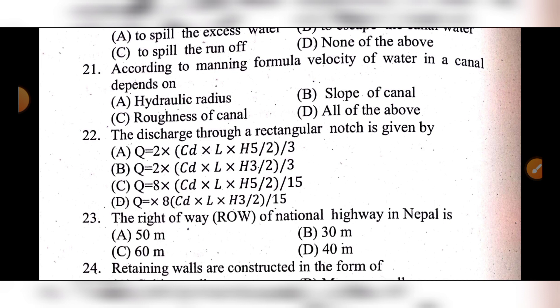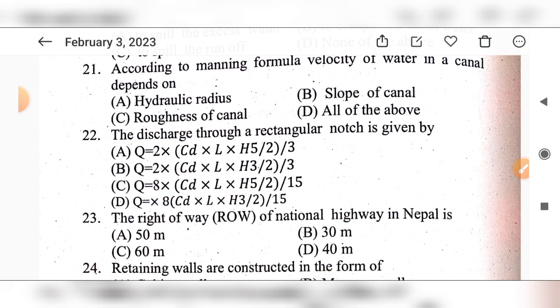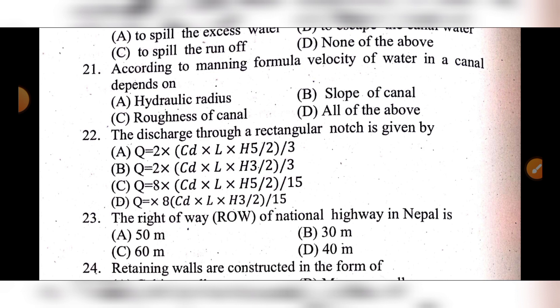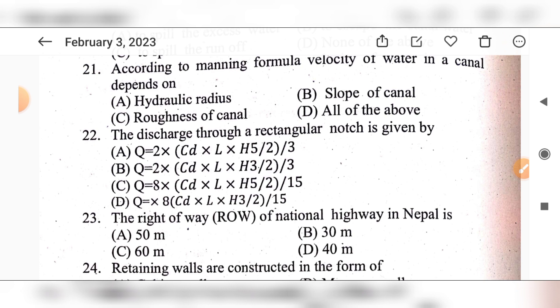Question 22: The discharge over a rectangular notch is given by — option A: Q = (2/3) × CD × L × H^(5/2), option B: Q = (2/3) × CD × L × H^(3/2), option C: Q = CD × L × H^(5/2), option D: Q = (8/15) × CD × L × H^(2/3). The answer is option B: Q = (2/3) × CD × L × H^(3/2).